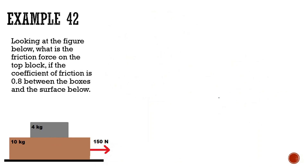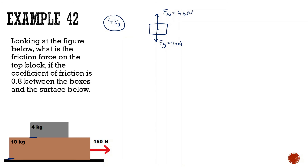Last problem: looking at the figure, what is the friction force on the top block if the coefficient of friction is 0.8 between the boxes and the surface below? Similar to the last question, there's friction between the boxes and also at the very bottom. We want to start with the free body diagram for the four kilogram block: force of gravity is 40 newtons, force normal from the 10 kilogram block pushing up is 40 newtons, and there's a force of friction — but we don't actually know exactly what that is yet.